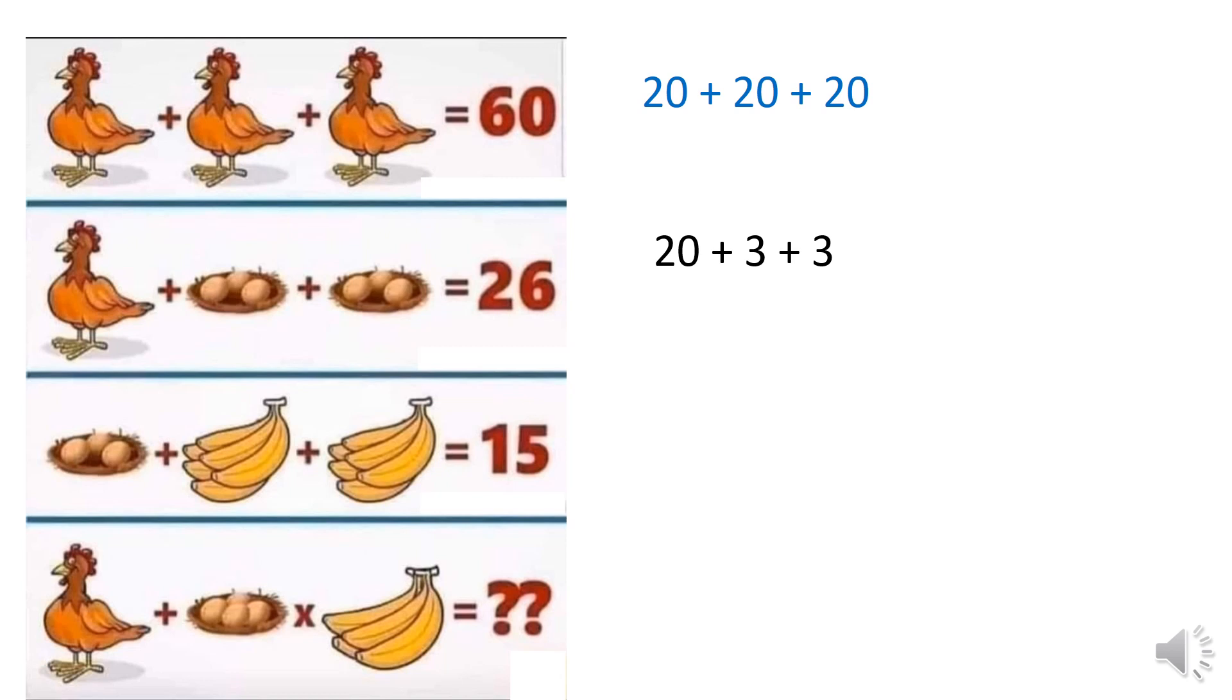This will give us a total of 26. On the next row we have three eggs plus a batch of six eggs plus an additional batch of six more eggs here, and it'll give us a total of 15. So that's three plus six plus six gives us a total of 15.